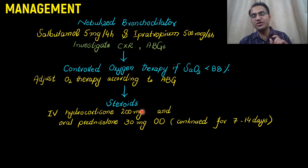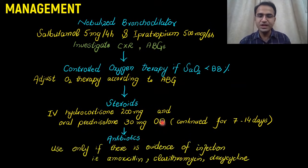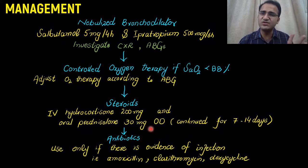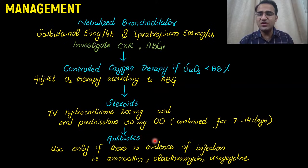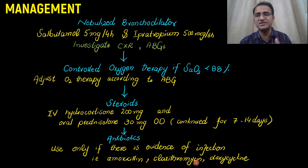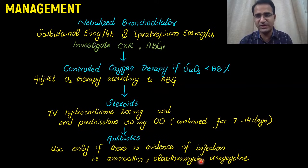Steroids are a very important component for the treatment of COPD exacerbation. If there is evidence of infection — since infection is one of the most common precipitating factors for COPD exacerbation — you need to start antibiotic therapy. In antibiotic therapy, you can go for amoxicillin, clarithromycin, or doxycycline. These drugs can be used to treat the infection.